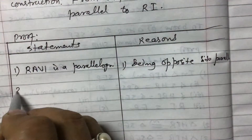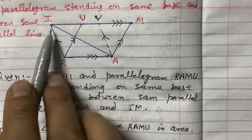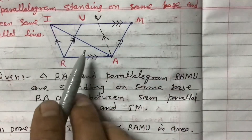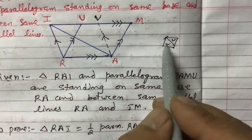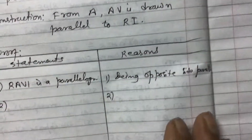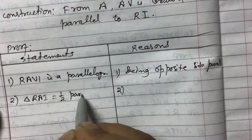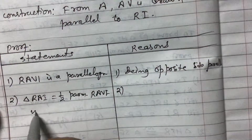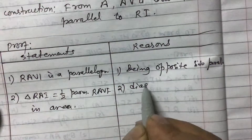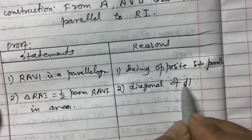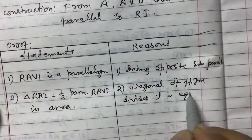Statement 2: In parallelogram RAVI, RI is a diagonal. A diagonal divides a parallelogram into two equal areas. So triangle RAI = (1/2) × area of parallelogram RAVI. Reason: In a parallelogram, the diagonal divides it into equal areas.